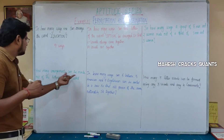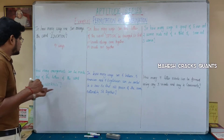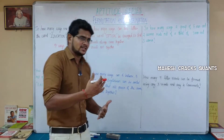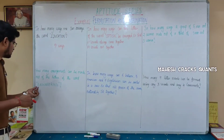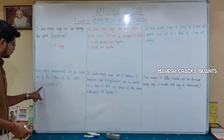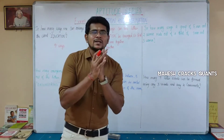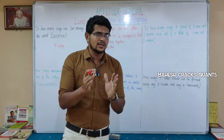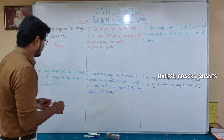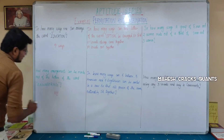Next question: how many arrangements can be made out of the letters of the word 'engineering'? First, how many letters are there? 2, 4, 6, 8, 10, 11 — there are 11 letters total in 'engineering'. So we have 11-factorial ways. Clearly, 11 letters gives 11-factorial ways.